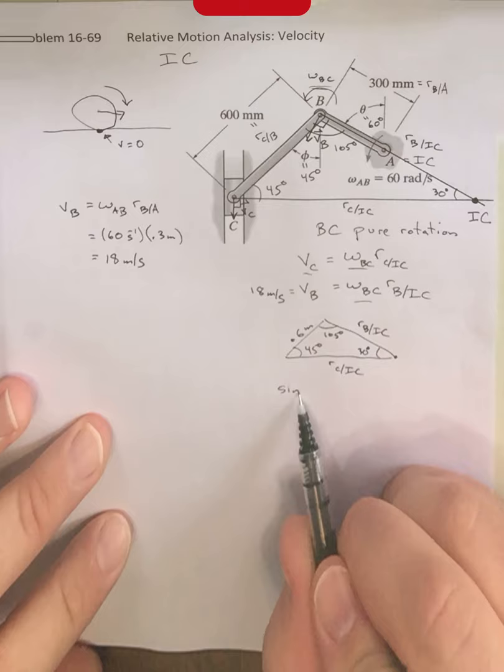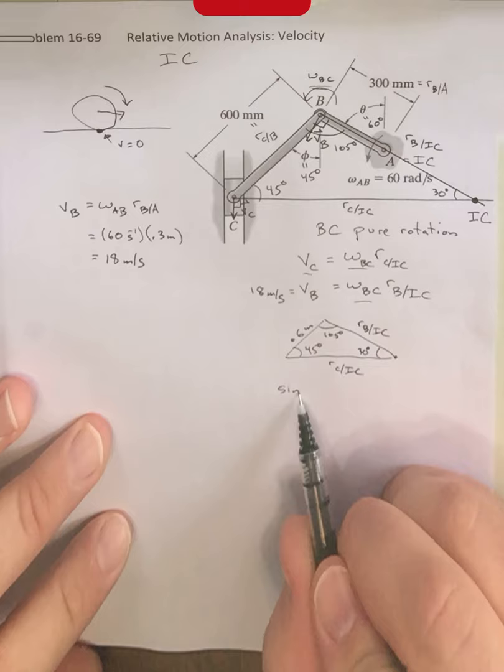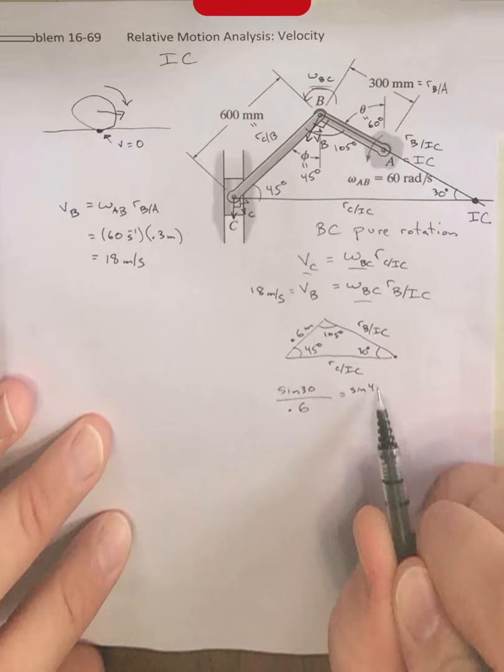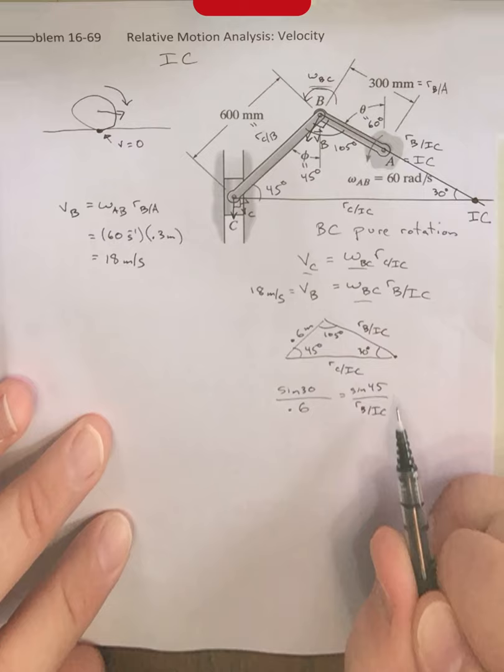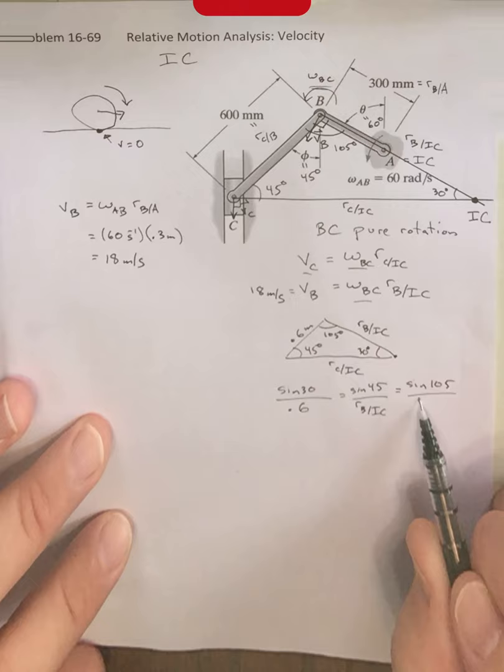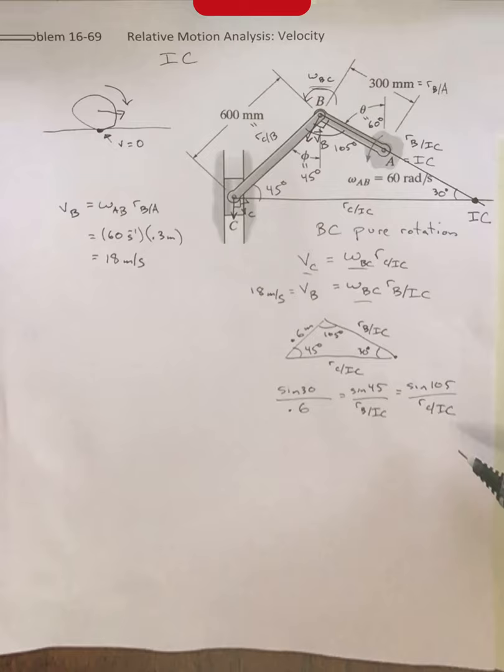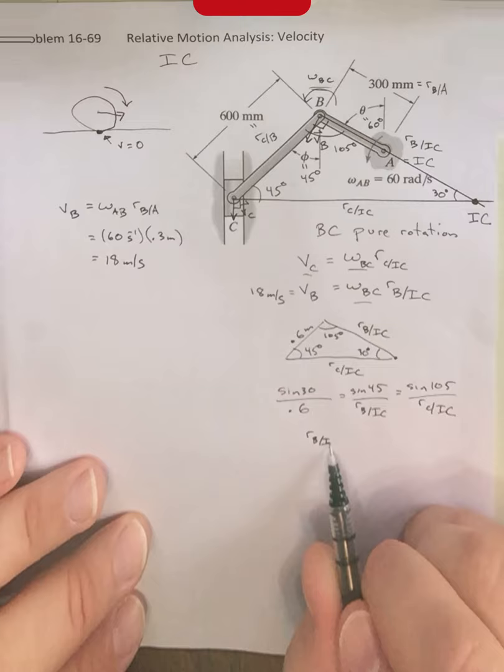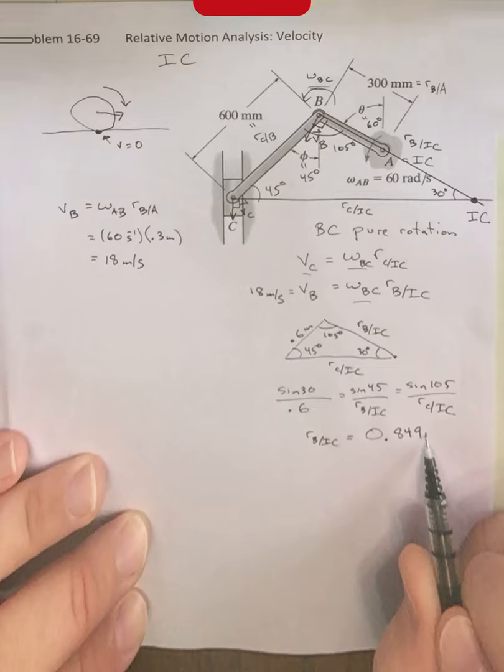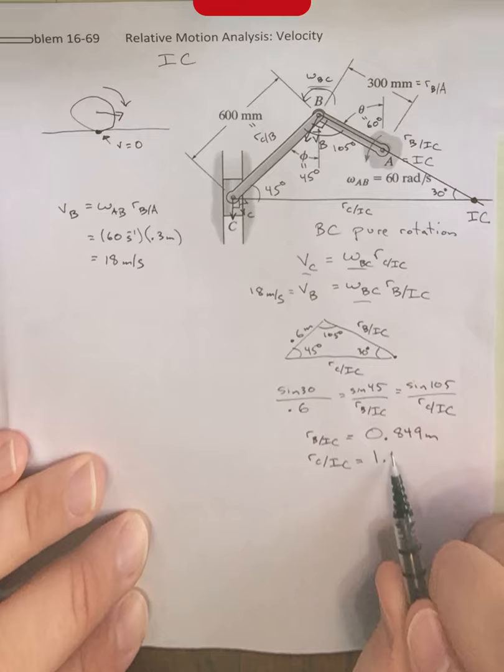Now we're going to bust out the law of sines. That says the sine of 30 divided by 0.6 is equal to sine 45 divided by R B IC is equal to the sine of 105 divided by RC/IC. We're just using this geometry to figure these out. I think my previous use of the word so was justified. Moreover, we can then solve for these two quantities. We get R B/IC is equal to 0.849 meters. We get that R C/IC is equal to 1.159 meters.